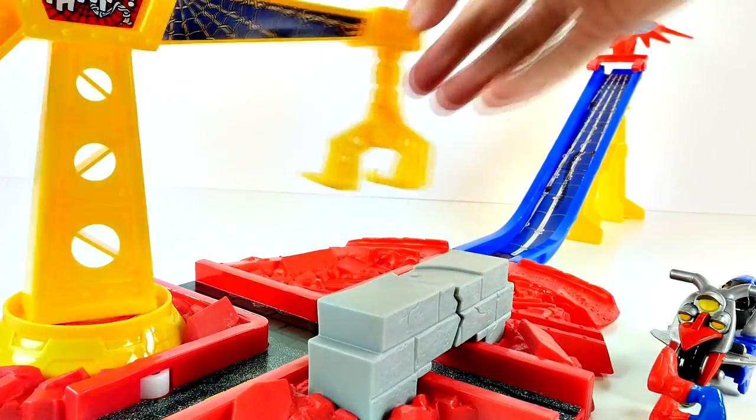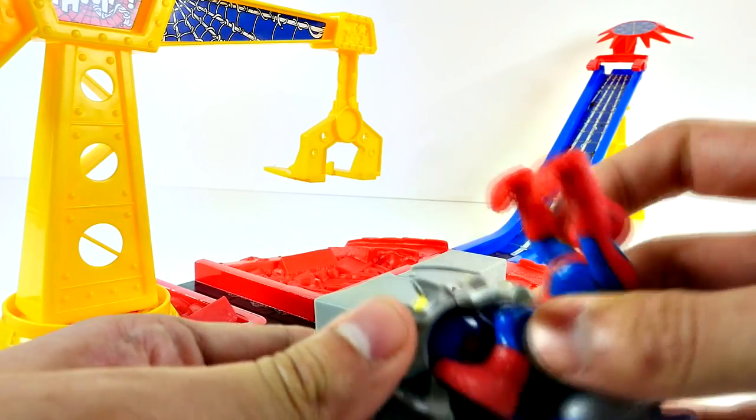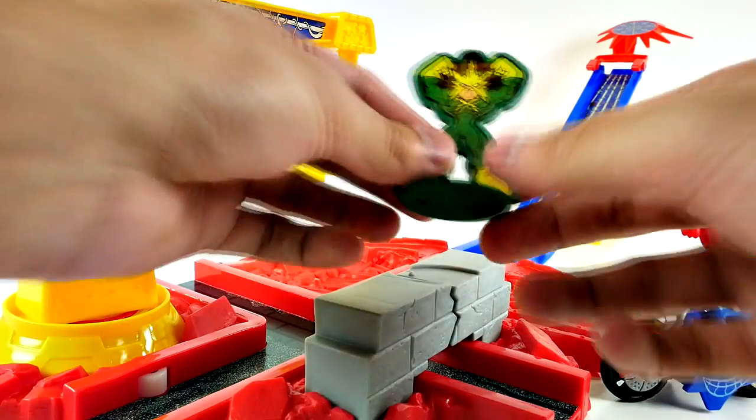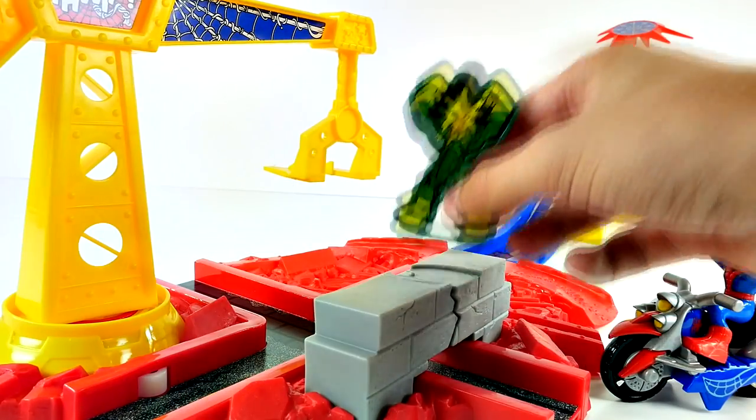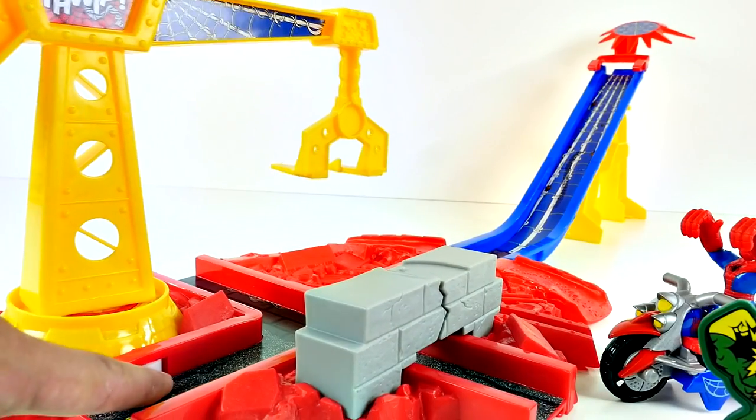Now I know what you're thinking, Seth, this set is so cool, but how do I get it to work? Well, here's what you do. First, we need Spider-Man to sit inside his little motorcycle. Or as I like to call it, his Spidey bike. And here we have Electro. Now you have to set up the crane first. And an important part is this little white button. We'll get to that later.